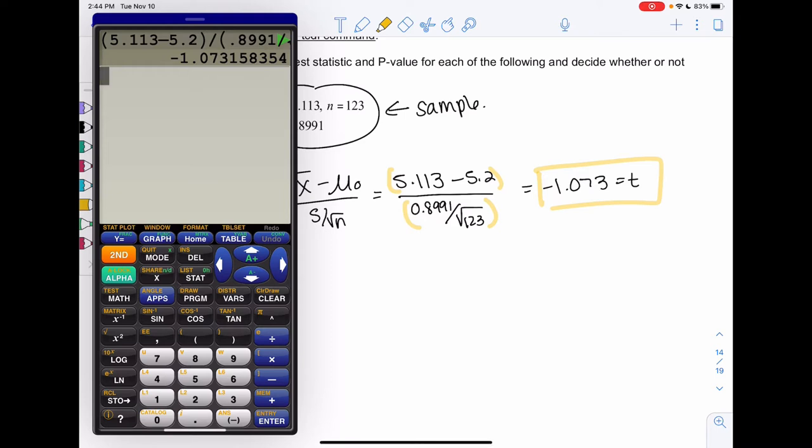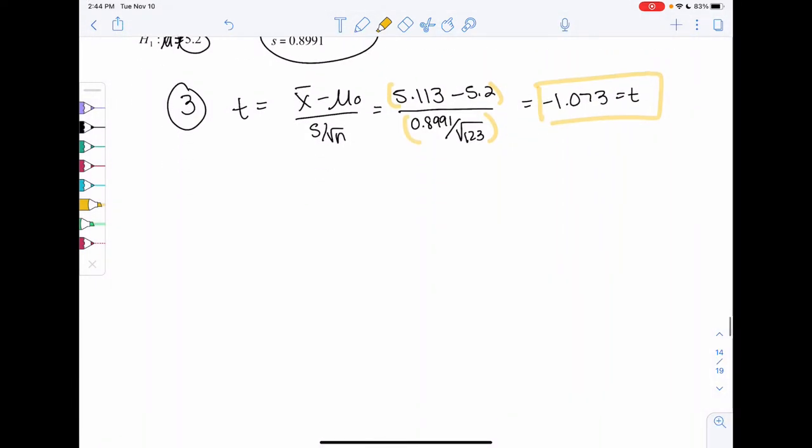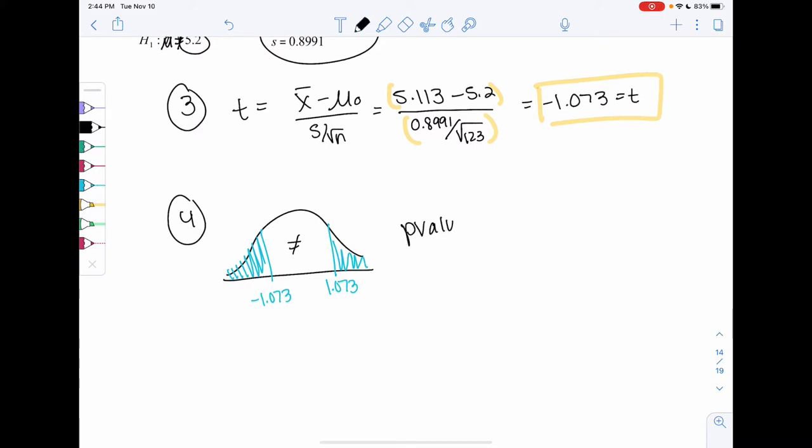Probably not rejecting because it's probably just random because it's within 2. Step 4, we're going to draw the normal curve. Since we're doing not equal, it'll be two-tailed. We have negative 1.073 will be the left side, which means the other tail will be positive 1.073. When we find the p-value, we're going to go ahead and double it for two-tailed.